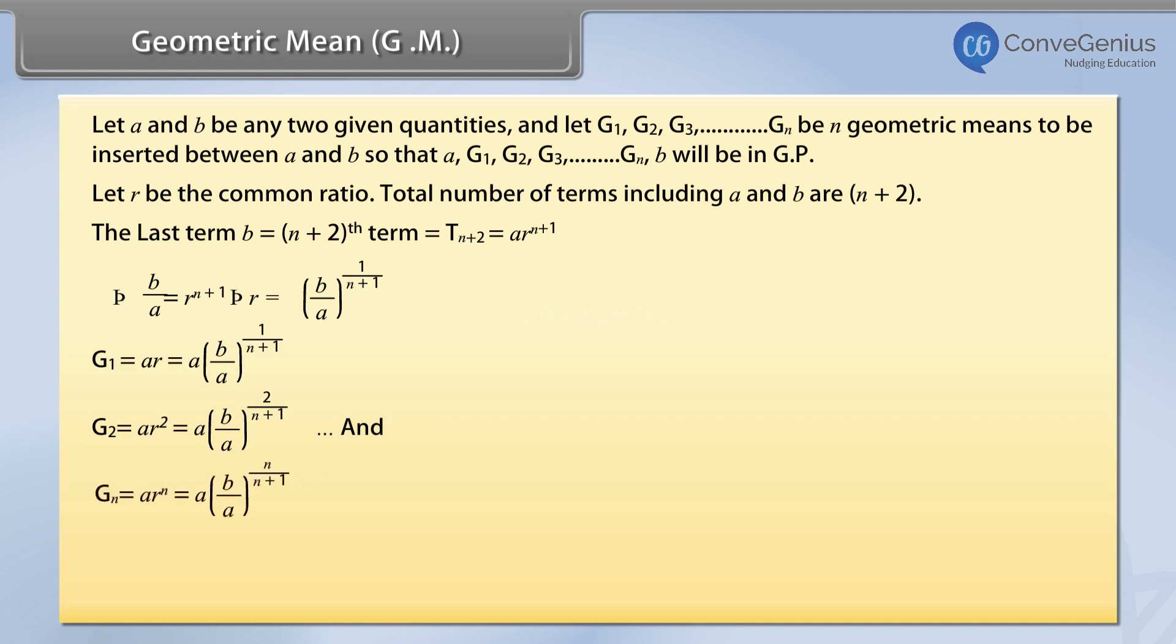And gn equals a times r raised to power n, which equals a times (b/a) raised to power n/(n+1).